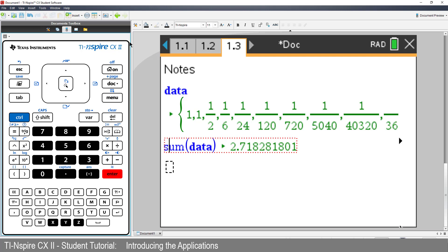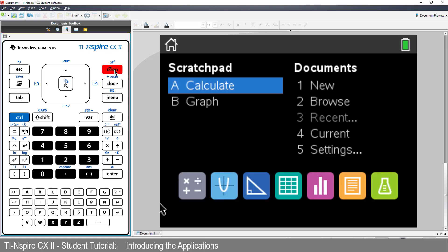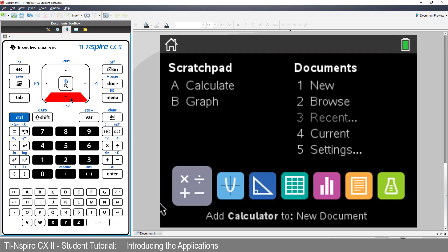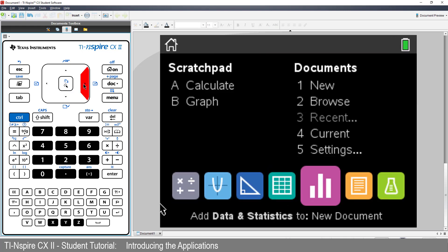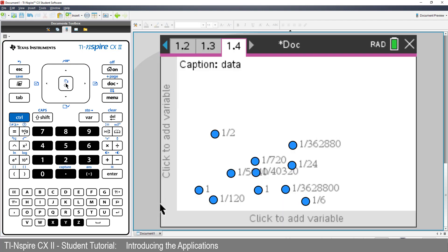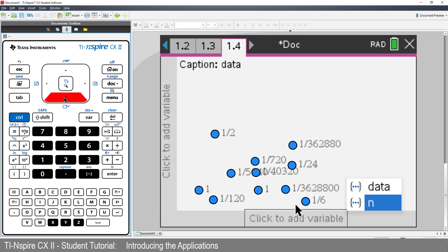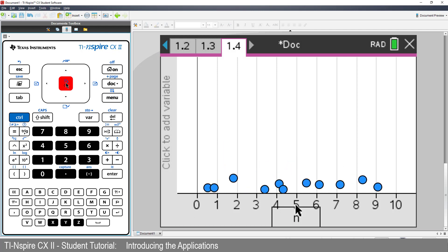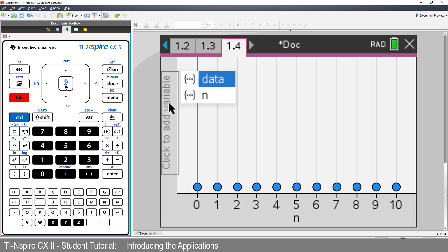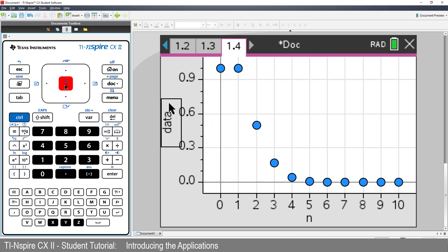OK, moving right along, press the Home key and insert a Data and Statistics application. The data from the spreadsheet is randomly sprawled across the screen. We could use the touchpad to navigate down to the X axis, or just press Tab. We'll put N on the X axis and press Enter. Now press Tab and put Data on the Y axis. Now we have a scatter plot.